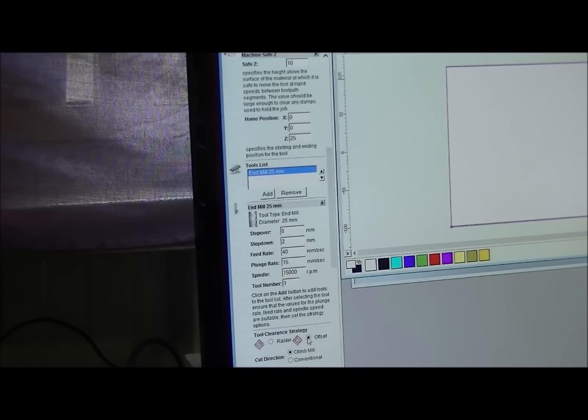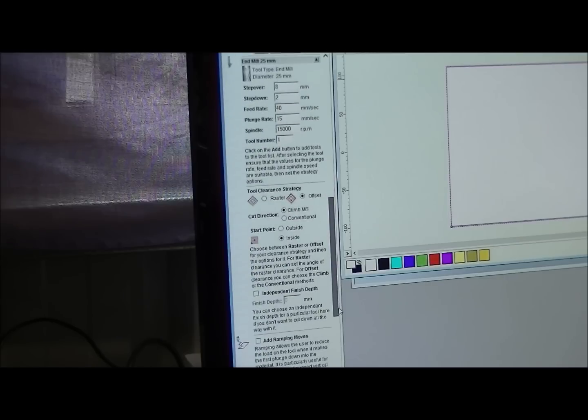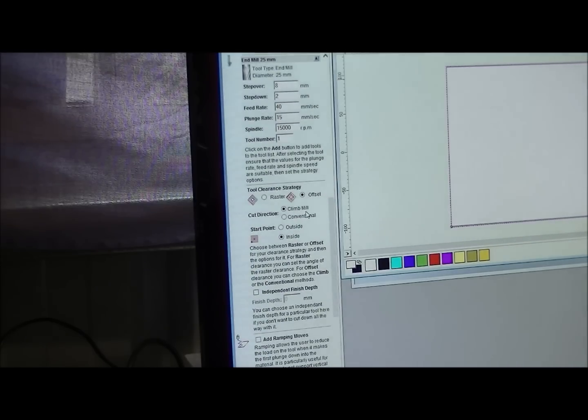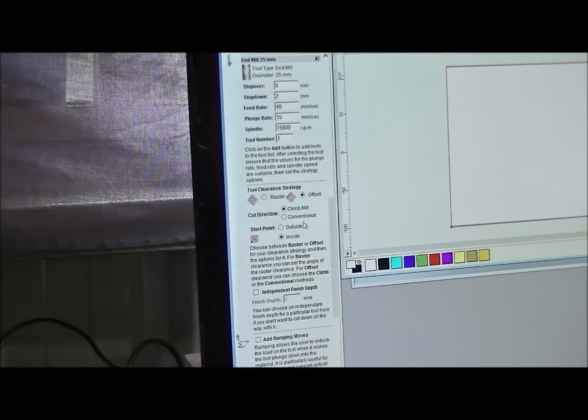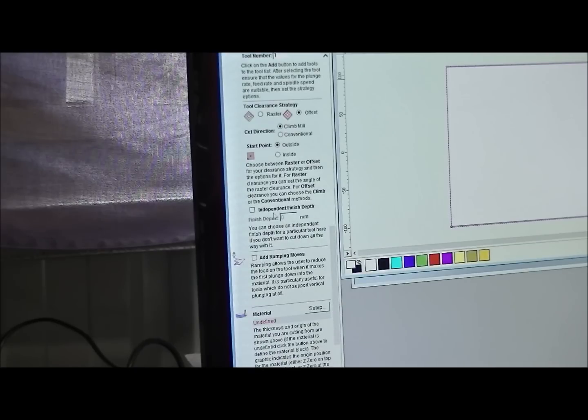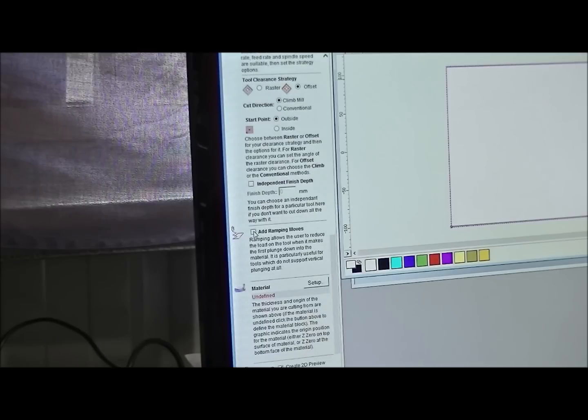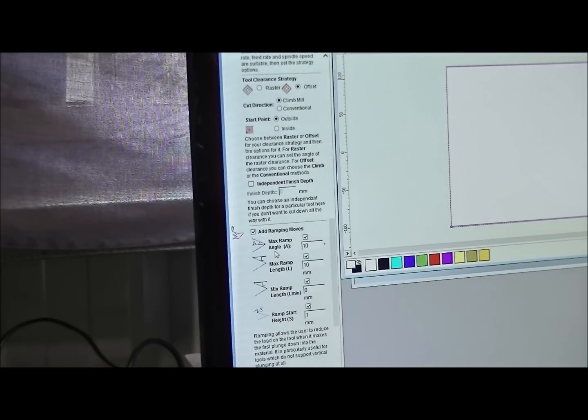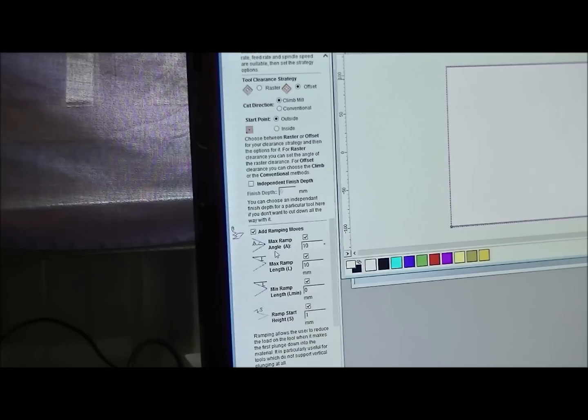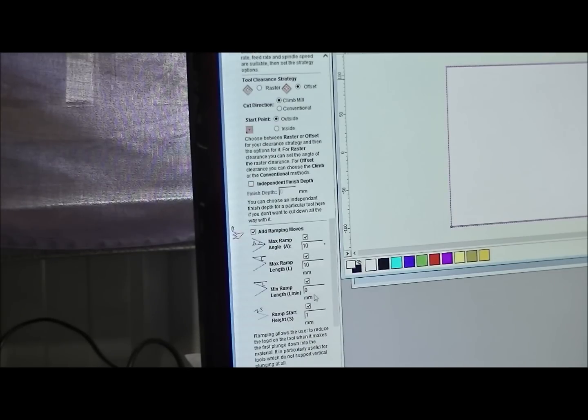We're going to do an offset raster. That means it'll go round in a box like this instead of zigzag back and forth in X. Climb milling, absolutely fine. If you go conventional milling, what happens? You get a bit of tear out with that. Climb milling is much better. And we're going to go from the outside in. In this case. Independent finishing tips. No, don't need to bother about that. We're going to use ramp moves. Now this is where the tool actually goes in a zigzag formation and goes into the material quite gently. And you can actually alter the parameters in this small dialog box here. But I always leave it in the set position because it works just fine. So why alter something if it works fine?